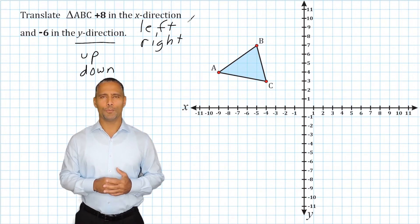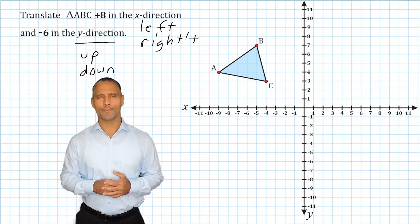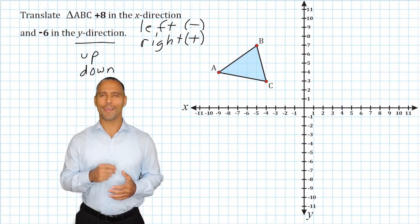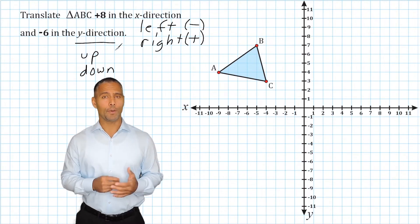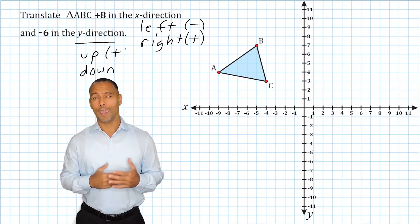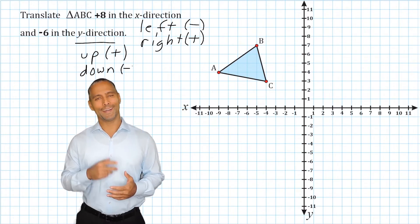A positive movement in the x-direction is movement to the right, and a negative movement in the x-direction indicates movement to the left. And in the y-direction, moving something up would be a positive movement, and moving something down would indicate a negative movement.